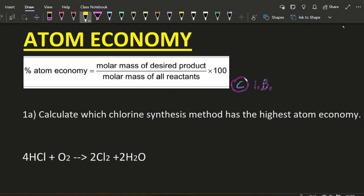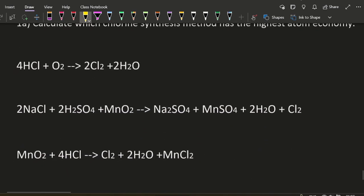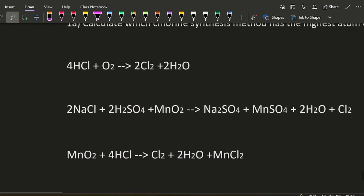Okay, atom economy. There's the equation that's from the data booklet, no need to memorize that. So let's look at a potential question: calculate which chlorine synthesis method has the highest atom economy. There's three methods there.